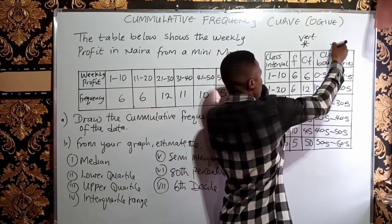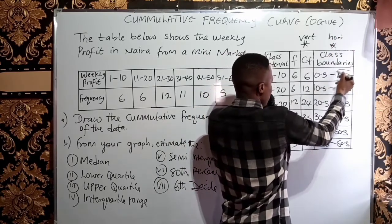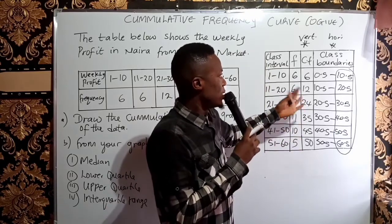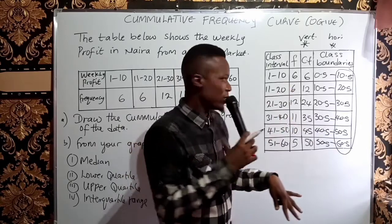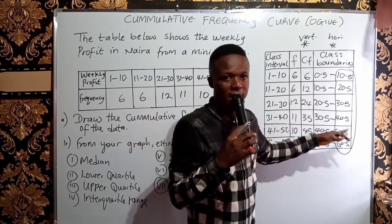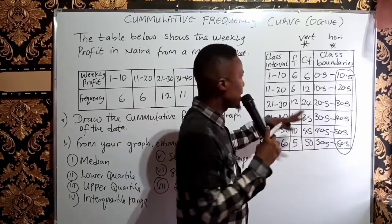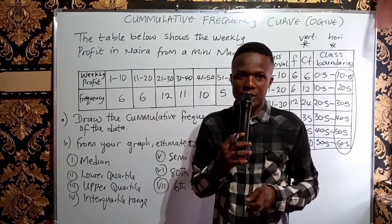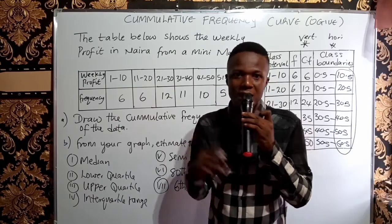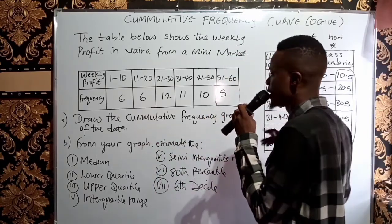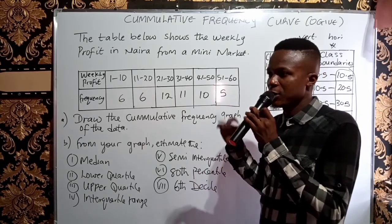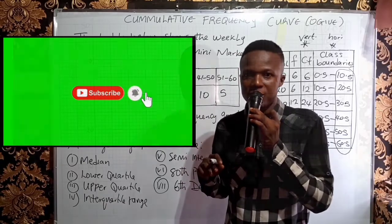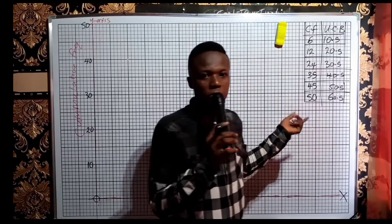Note that in making the Ogive, you only need the cumulative frequency and the upper class boundary. The lower class boundary is necessary when using formulas to calculate the median and other values, that's why I told you how to get it. The cumulative frequency stays at the vertical side while the upper class boundary stays at the horizontal axis.